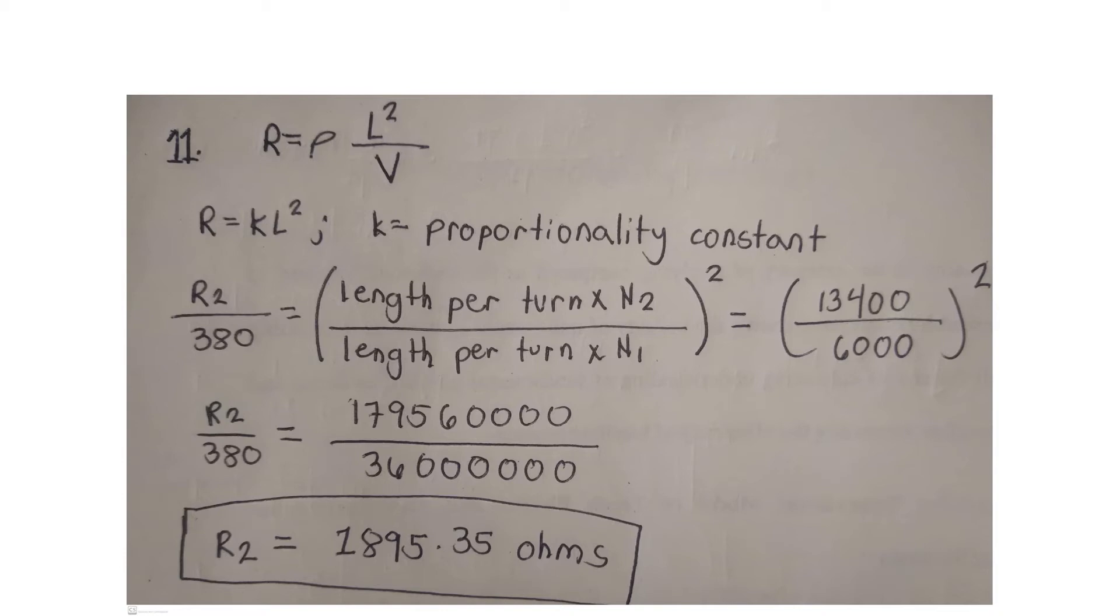With the volume constant, resistance varies directly as the square of the length. We will use the formula: resistance is equal to proportionality constant multiplied by the square of the length.